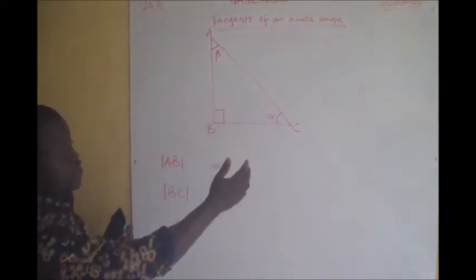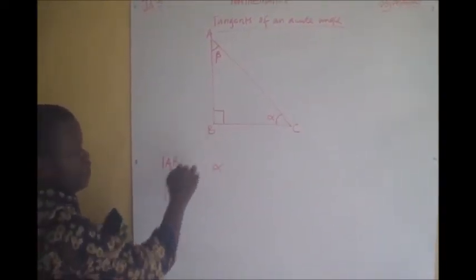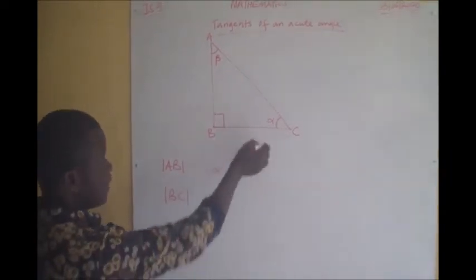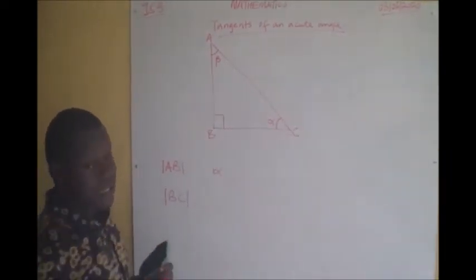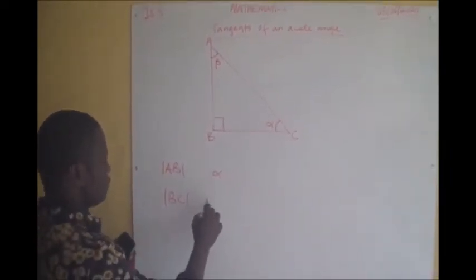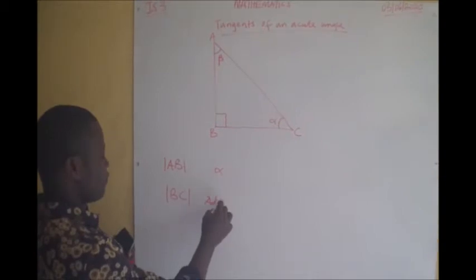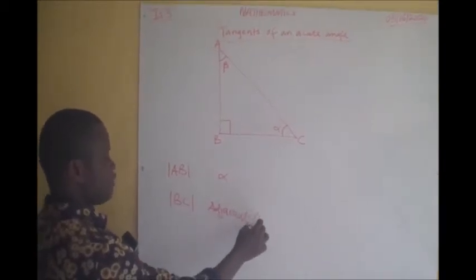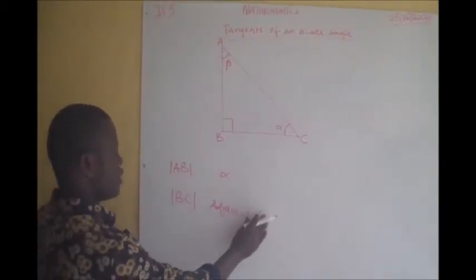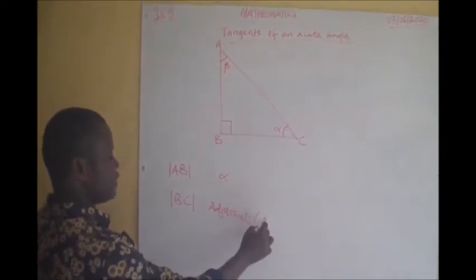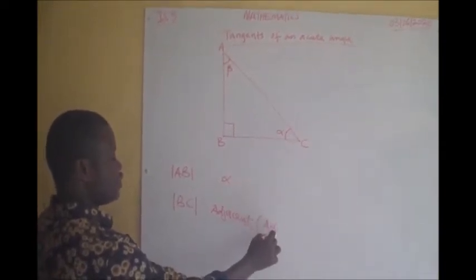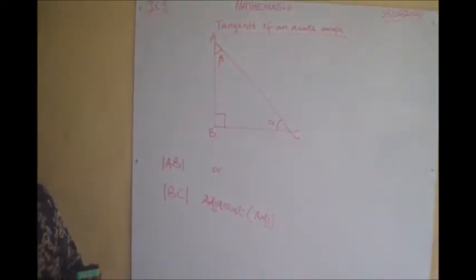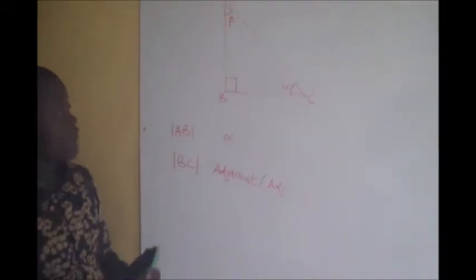In that case, we say that line BC is called the adjacent side of the right-angled triangle — abbreviated as ADJ. It is the adjacent side of angle alpha.